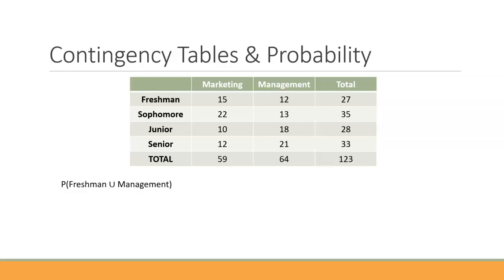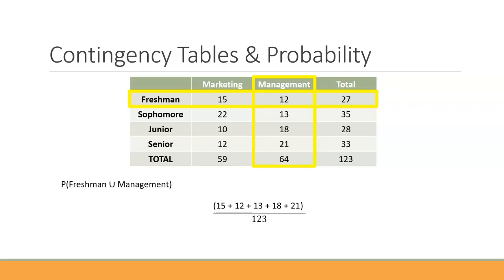Let's first work on the 'or' — freshman or management. It's helpful to highlight the pieces we care about: the freshman row and the management column. Notice there's a 12 where freshmen and management intersect. We need to be careful because we don't want to count that 12 twice. That's why we can't just go 64 plus 27 and take the two totals — that would count the 12 twice.